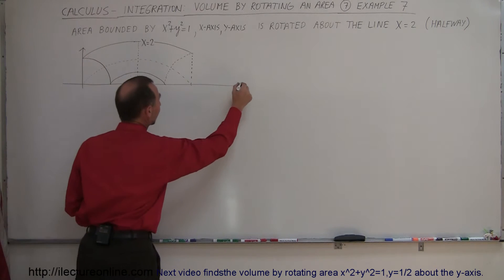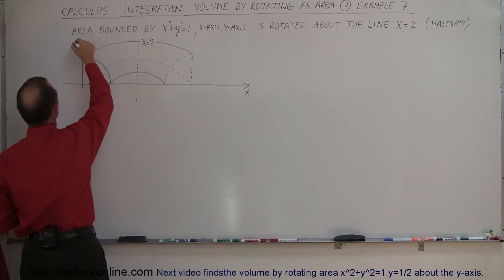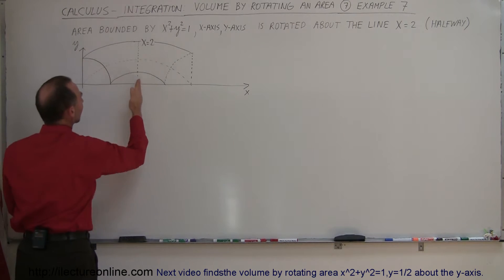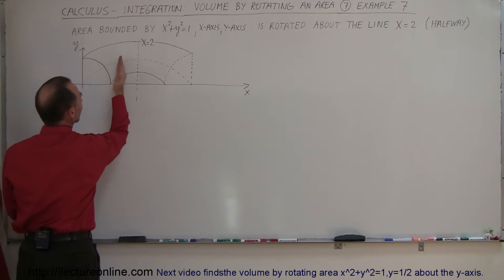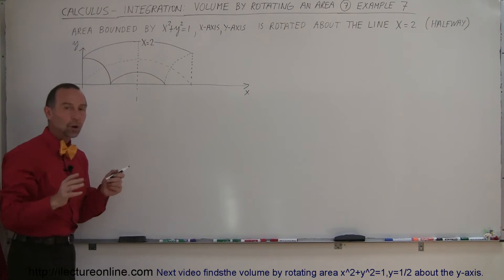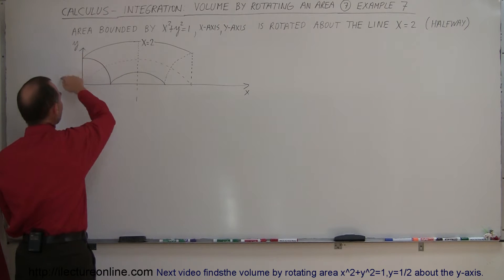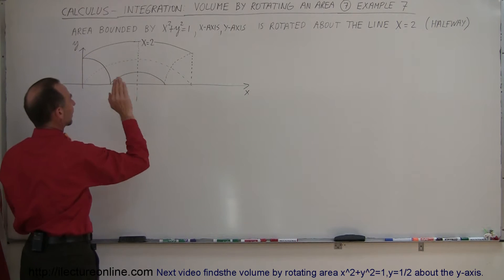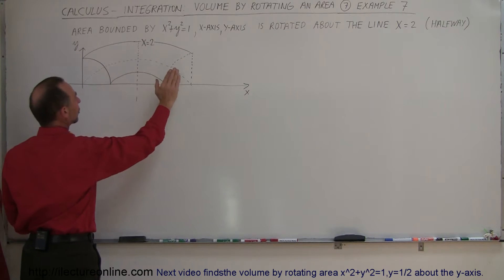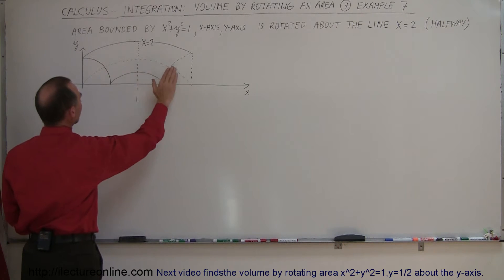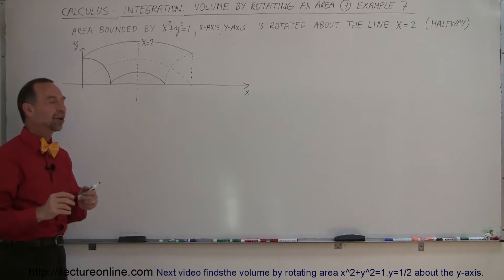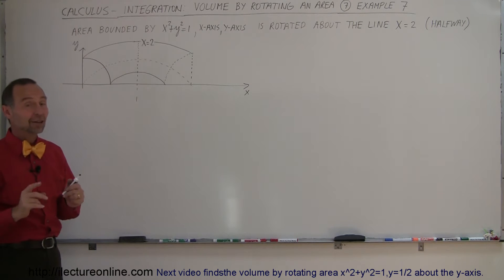This is our x-axis and this is our y-axis. When we take this area and rotate it about the line x equals 2, we end up with something like a section of a donut. A full donut would go all the way around, but here we're only going halfway — 180 degrees, a half rotation — and we're only taking a quarter of the donut shape. We're trying to find the volume of that.